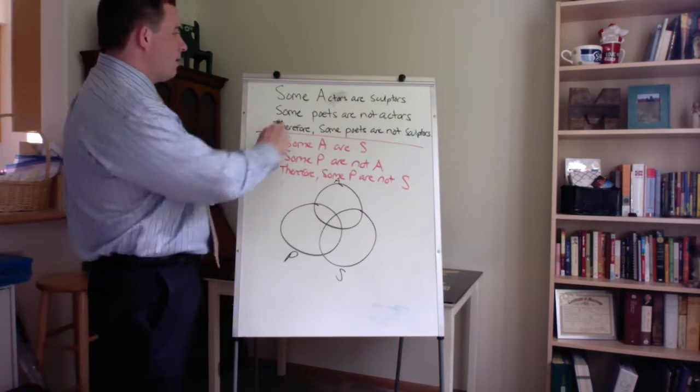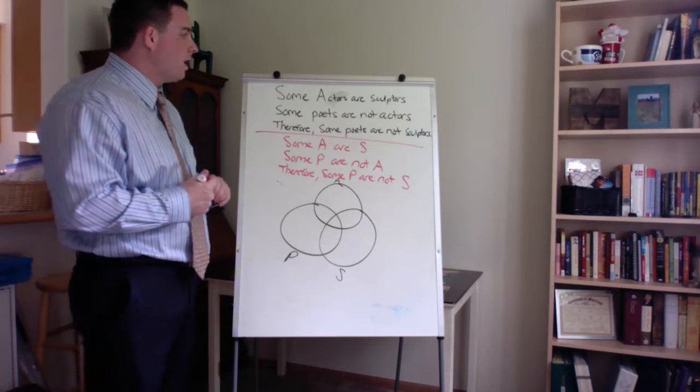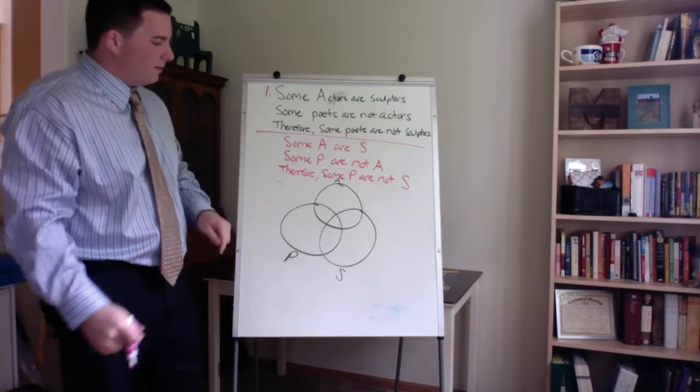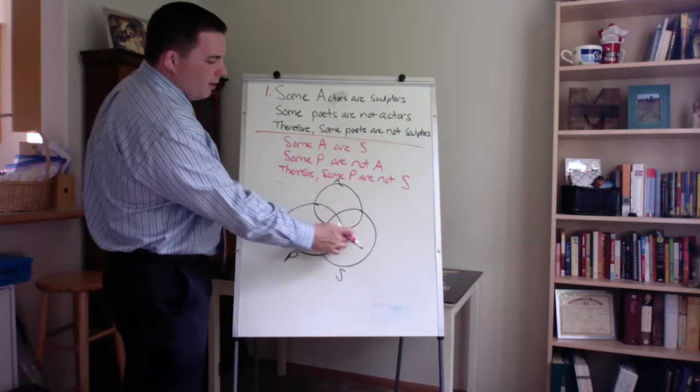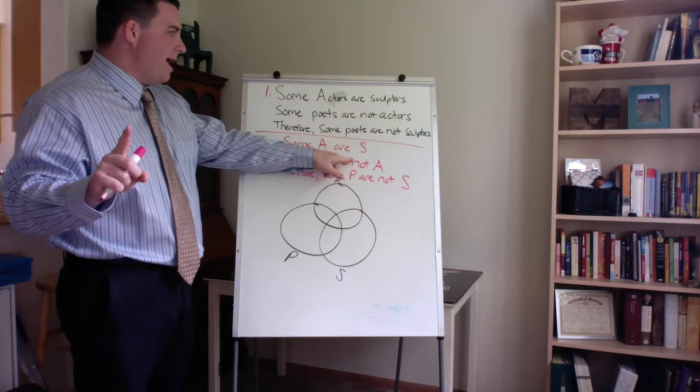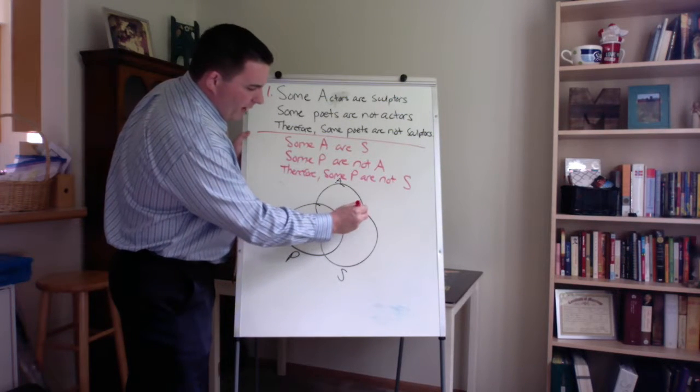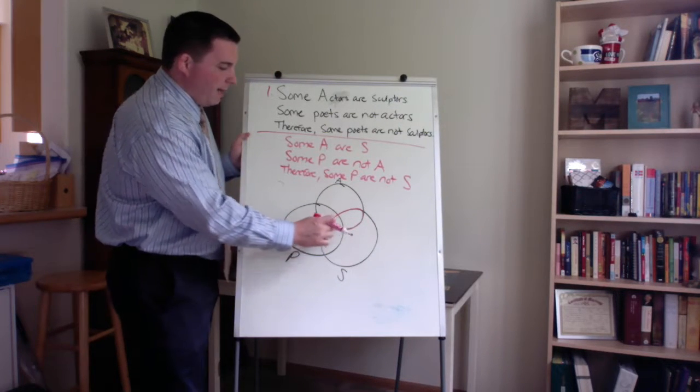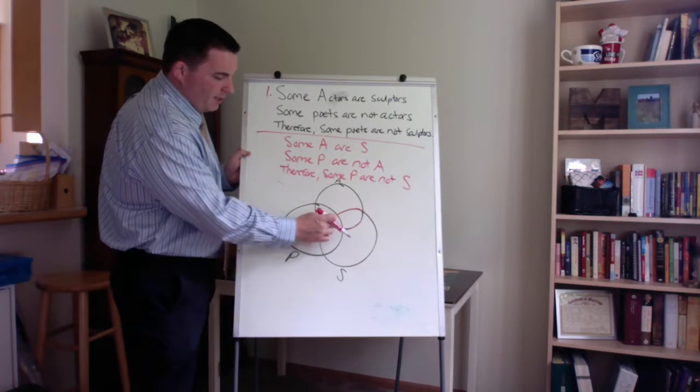Now we've got to be careful here. Premise one, premise two, both particular, so it doesn't matter what order we start with. We'll look at these two circles here. So we have our A circle, we have our S circle. So we're told at least one A exists and one A is an S. So we want to look at the area of overlap between A and S, which would be right there. So it could either be in this area, which is empty, or this area, which is empty.